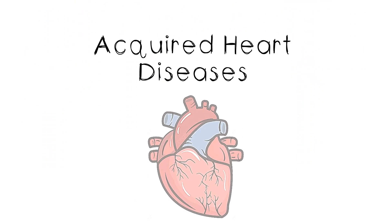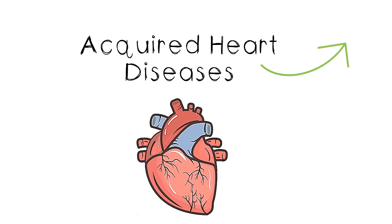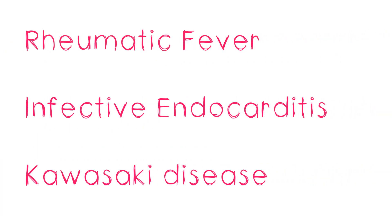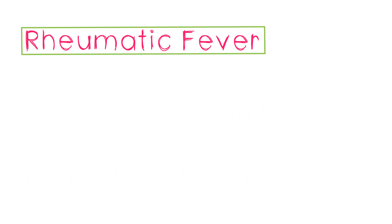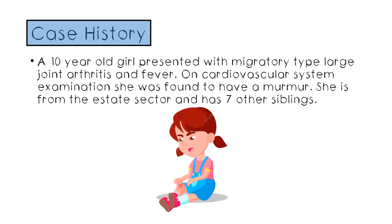Today we start on the second topic of the series on pediatric case discussions. I will be giving you an overview of how to take history from these patients, what points you should focus on in the examination, the investigations you should do, and the theory for viva discussion. Today our topic is acquired heart diseases. There are three important acquired heart diseases in children: rheumatic fever, infective endocarditis, and Kawasaki disease. In this video we will be learning all about rheumatic fever.